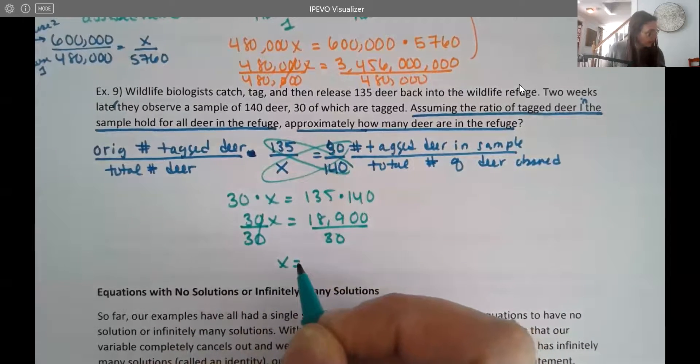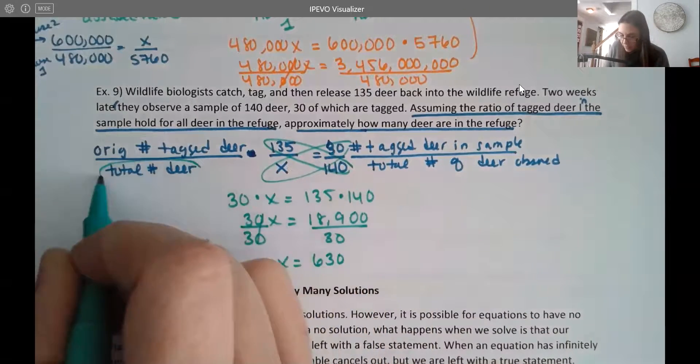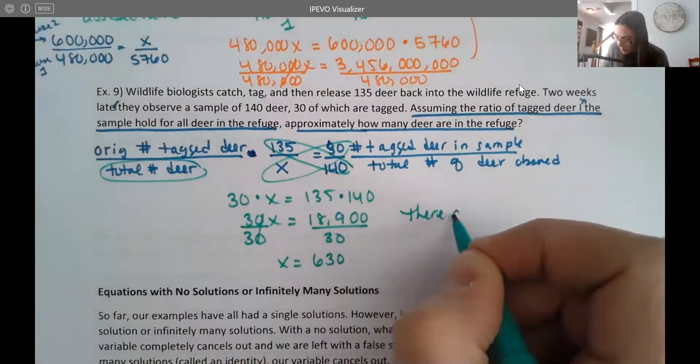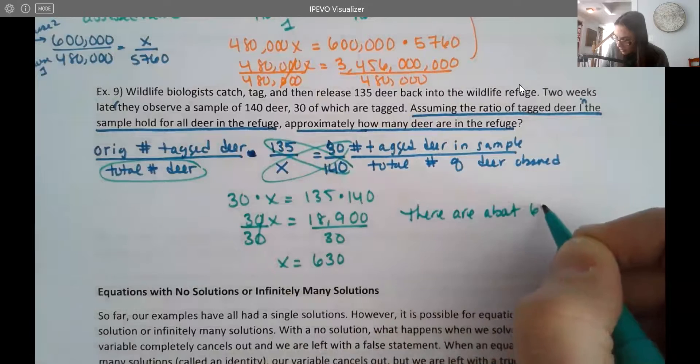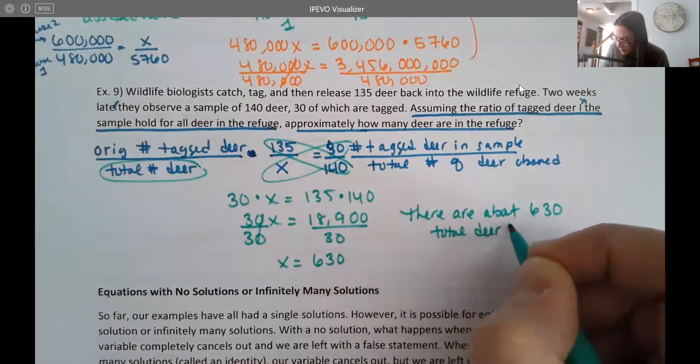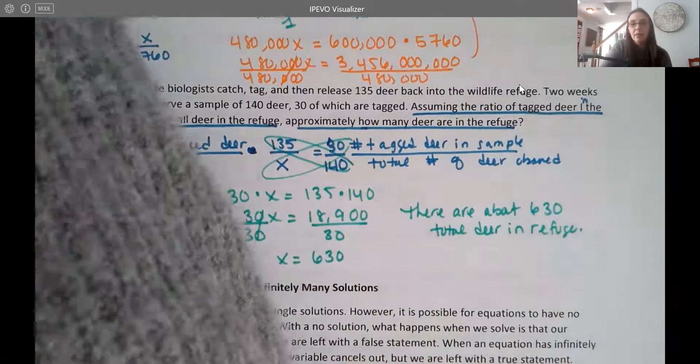All right. And when we get there, we get 630. Now remember, X represented the approximate total deer. So there are about 630 total deer in the refuge.